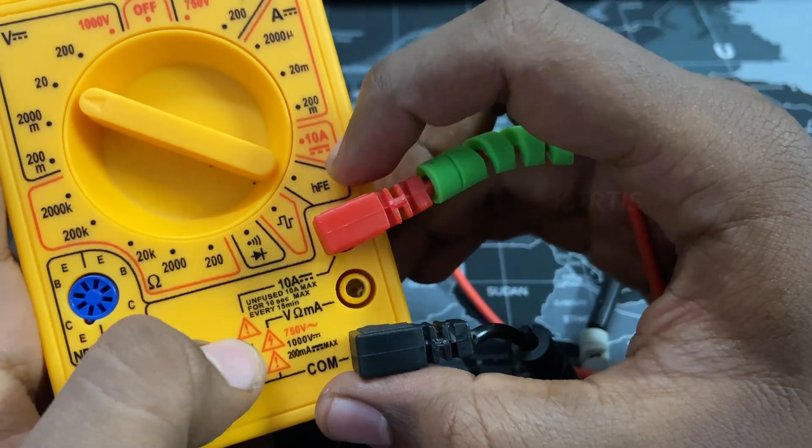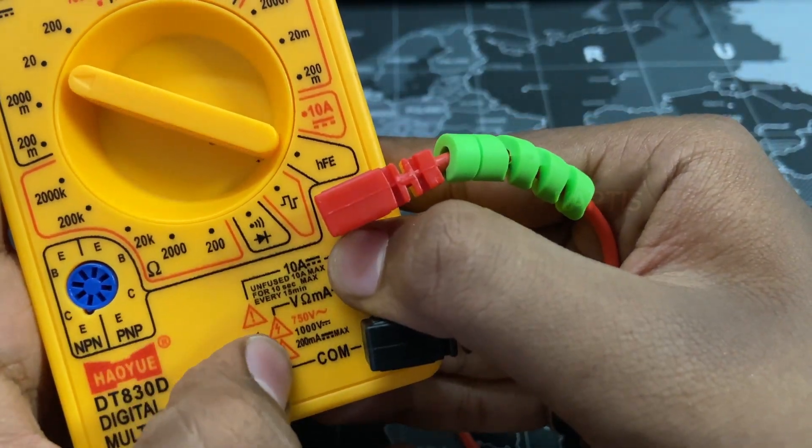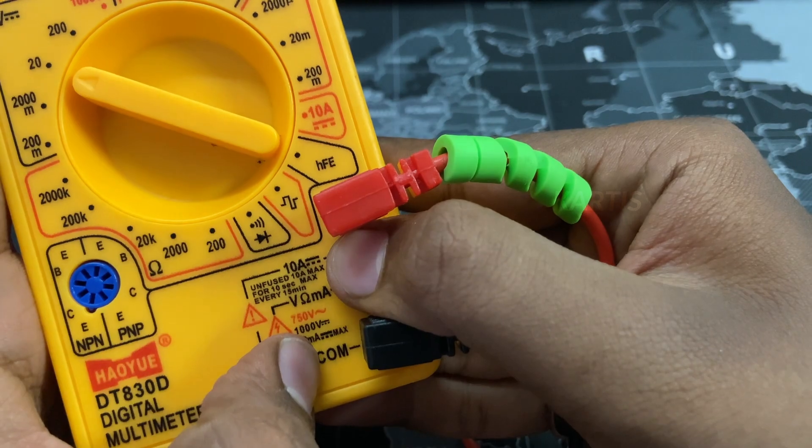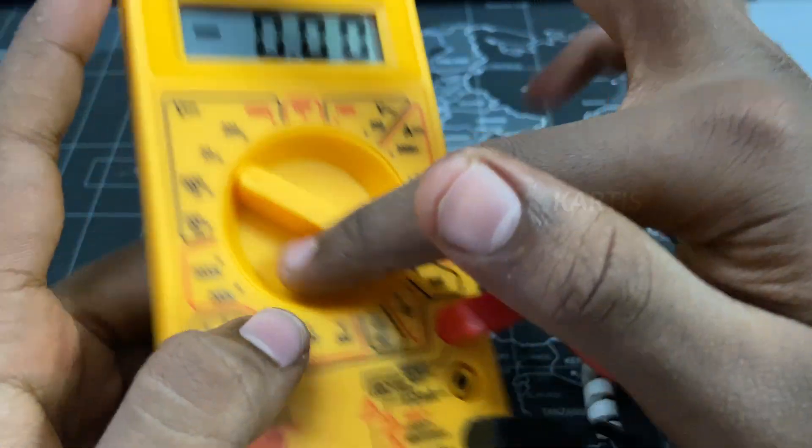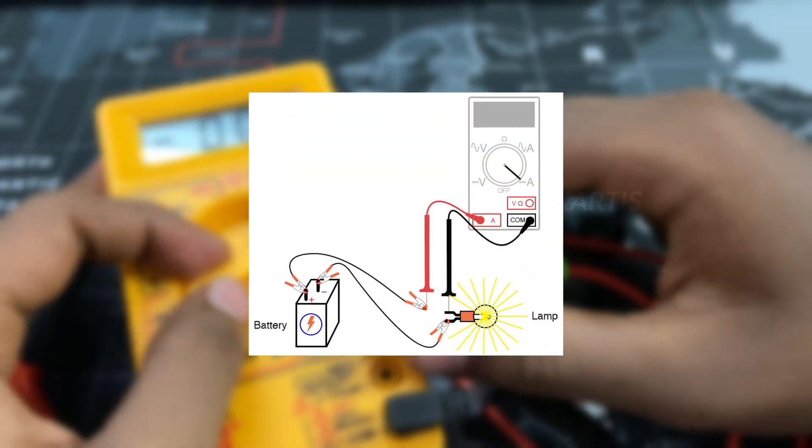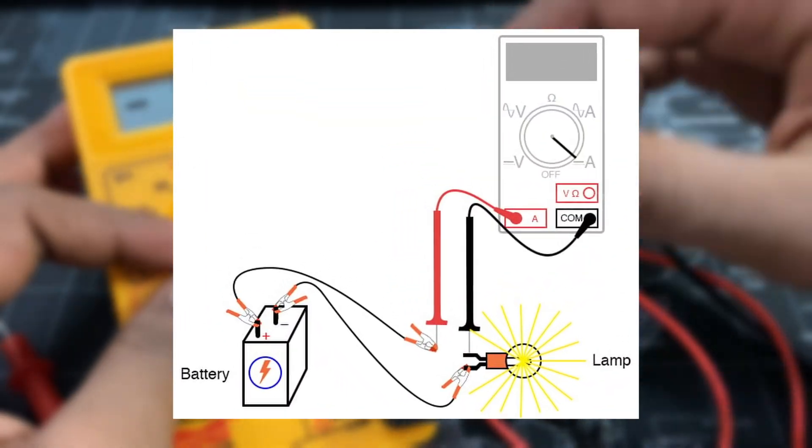If you have 10A, you can measure 10A. If you measure 10A, you will have a gap in 10 seconds. You will also damage the internal components. If you put it in the circuit, you can place it in the multimeter. If you place it in the circuit, you can measure the current.